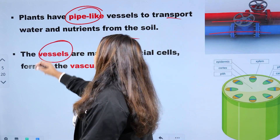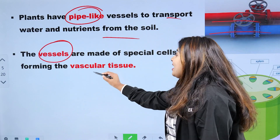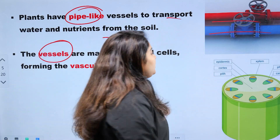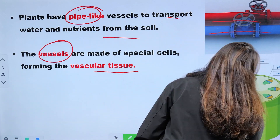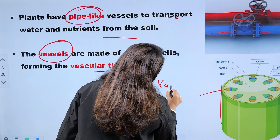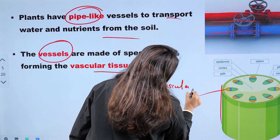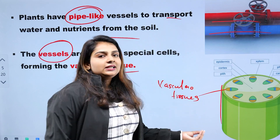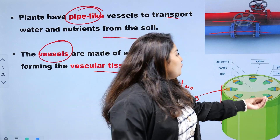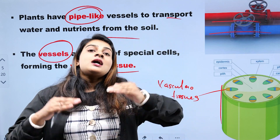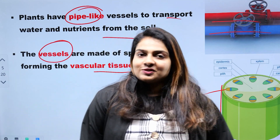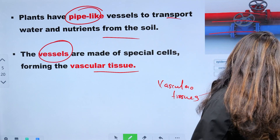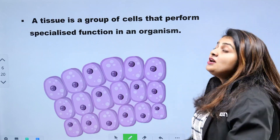Here we have vascular tissues — a special type of cells. This is a pipe-like portion. These are vascular tissues. Vascular tissues are distributed through the leaves. How do we collect the blood vessels? We use blood vessels for different levels.